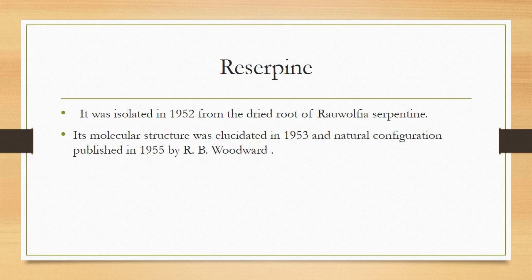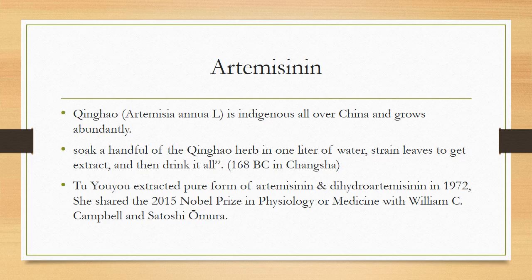Reserpine was isolated in 1952 from the dried root of Rauwolfia serpentina. Its molecular structure was elucidated in 1953, and its absolute configuration published in 1955 by R.B. Woodward. Artemisinin — Qing Hao — is indigenous all over China. The theory was to soak a handful of Qing Hao herb in one litre of water, strain the leaves to get an extract, and drink it. Another scientist extracted the pure form of artemisinin in 1972 and shared the Nobel Prize in Physiology and Medicine with William C. Campbell and Satoshi Ōmura.